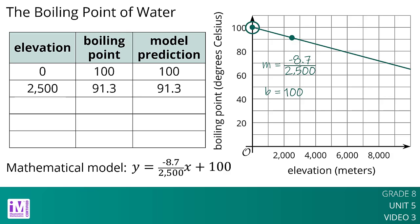We already know our model accurately predicts the boiling point of water for 0 meters and 2,500 meters of elevation. Testing our model for the boiling point of water at an elevation of 1,000 meters above sea level, when x equals 1,000, it accurately predicts that water will boil at 96.5 degrees Celsius.